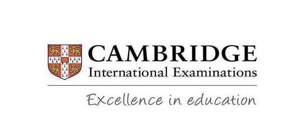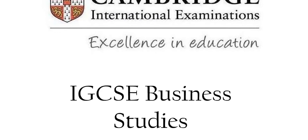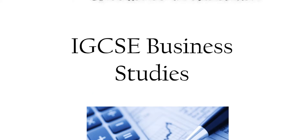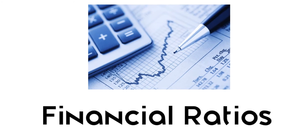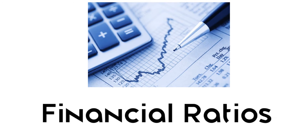This video is for IGCSE Cambridge specification for Business Studies and what we're going to be looking at is Unit 5. We're going to be looking at all the financial ratios involved such as balance sheets with liquidity ratios, income statements with profitability ratios, as well as return on capital employed.